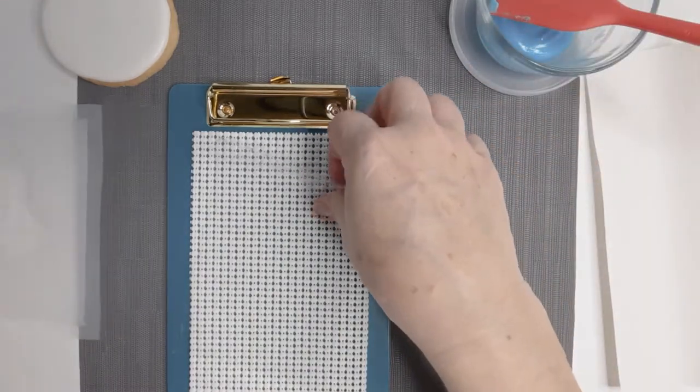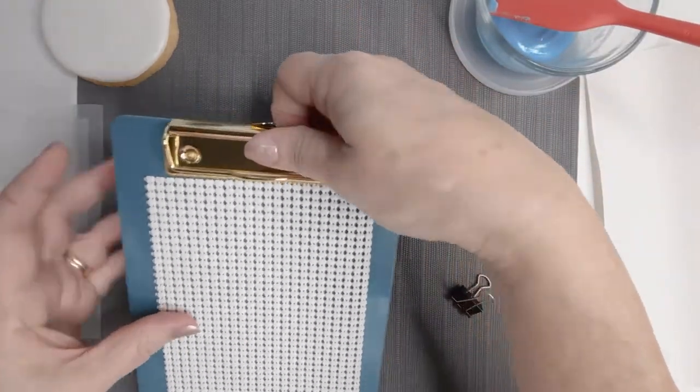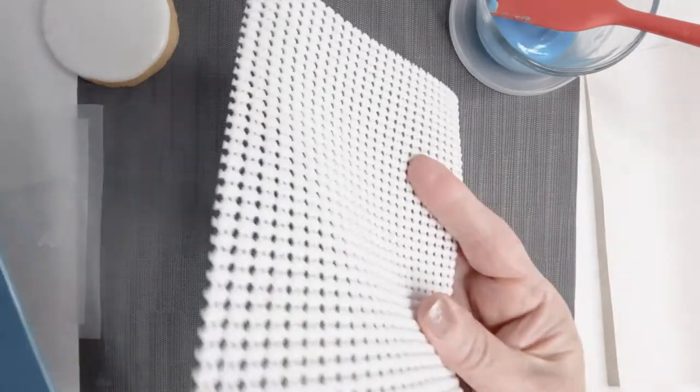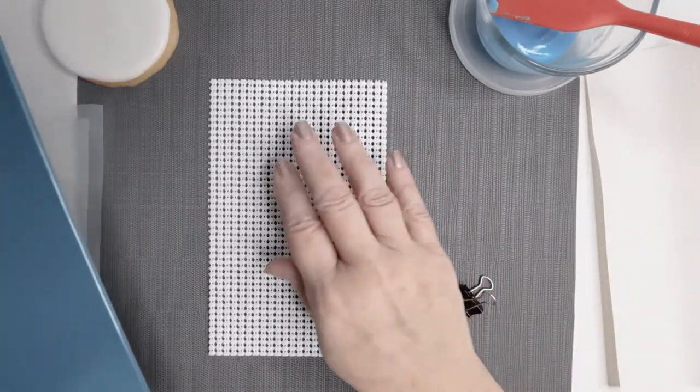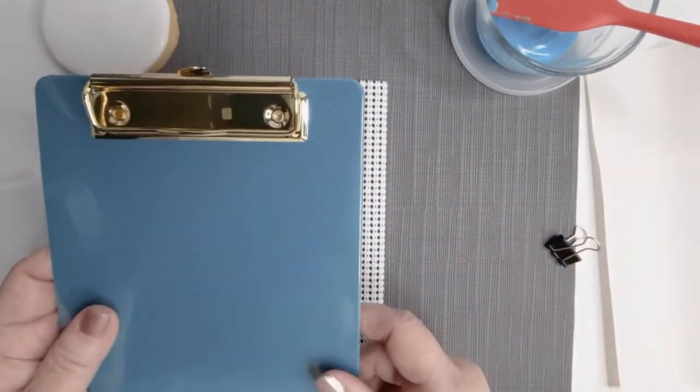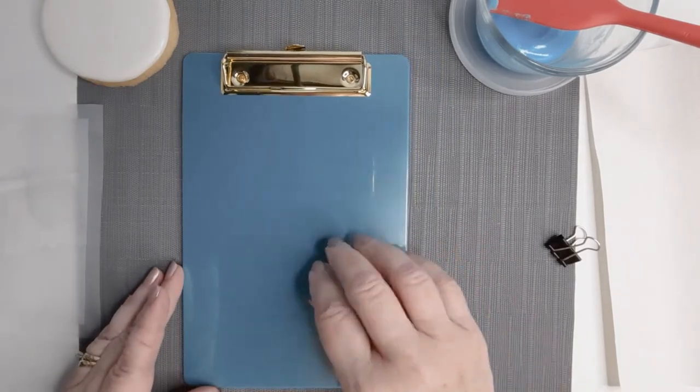And so you're going to want to take a clipboard. This is just a rubber shelf liner that I put under it to hold it in place so it doesn't scoot on you.